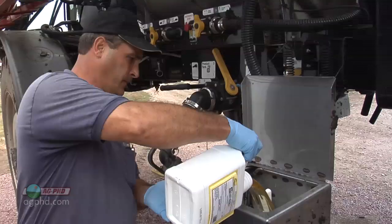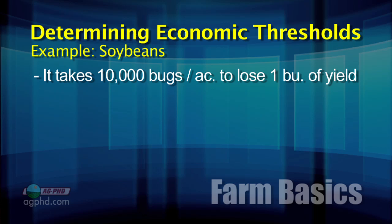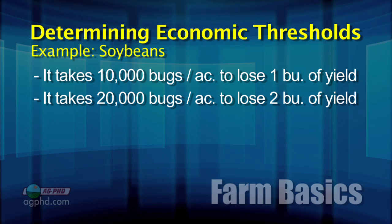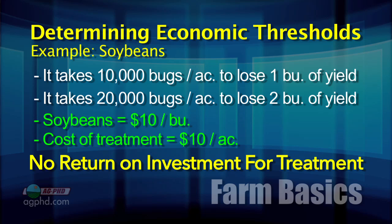What this comes back to is how many bugs does it take to do a certain amount of yield damage? For example, let's say in an acre it takes 10,000 bugs to cause one bushel yield loss and 20,000 bugs to cause two bushel yield loss for soybeans. If the soybeans are worth $10 a bushel and the cost of the treatment was $10, then obviously if you're going to spend $10 to gain $10, that really doesn't make any sense.